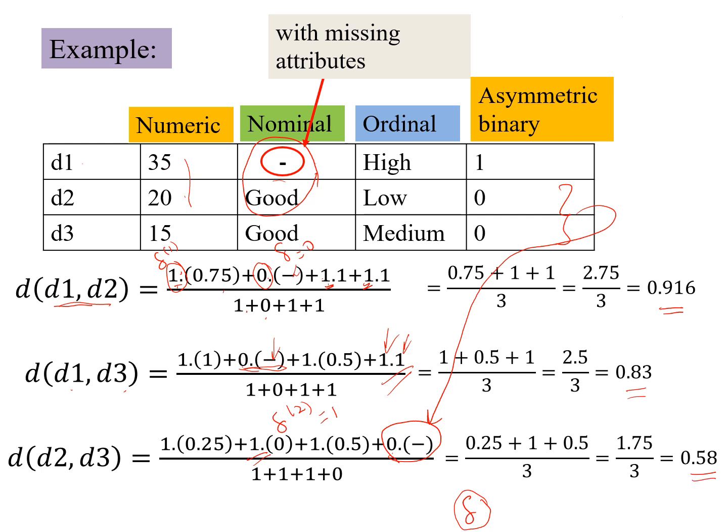So we could create the similarity matrix for this small example as, the distance between d1, d2 is 0.916. This value is again 0. Then we have 0.83.